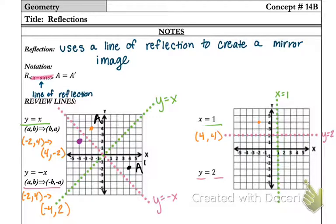The reason for this is from my line of reflection, I am over 1, 2, 3. I'm back 3. So to reflect the point, I then need to go 3 in the opposite direction from my line of reflection. So 1, 2, 3, which is how I got the point 4, 4.